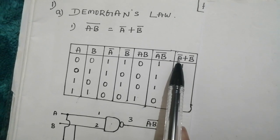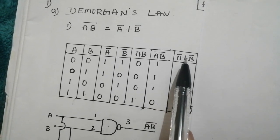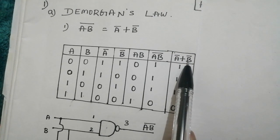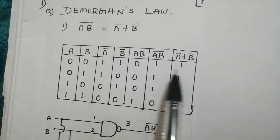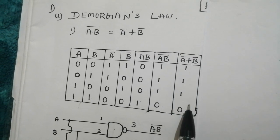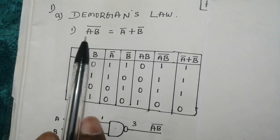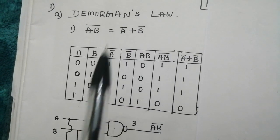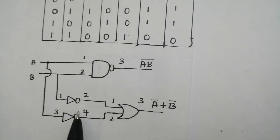Next we have A bar logical OR operation with B bar. So if you look into the last two columns, the outputs are same. So that indicates De Morgan's first law is verified. The respective boolean circuit is given below.